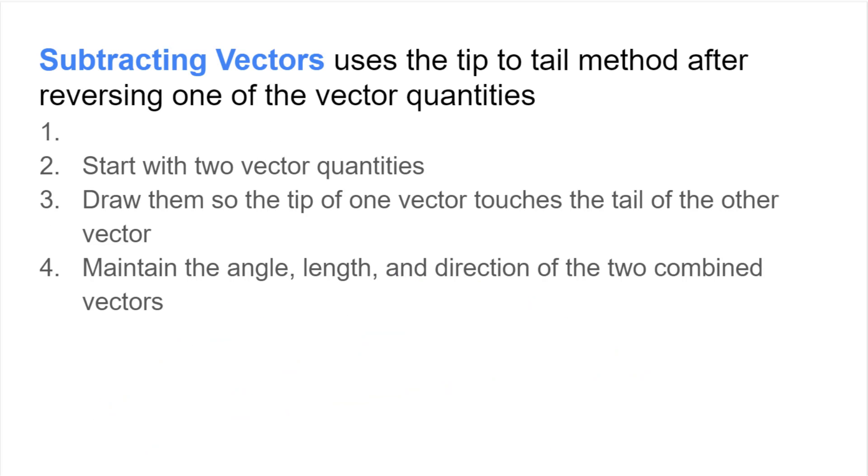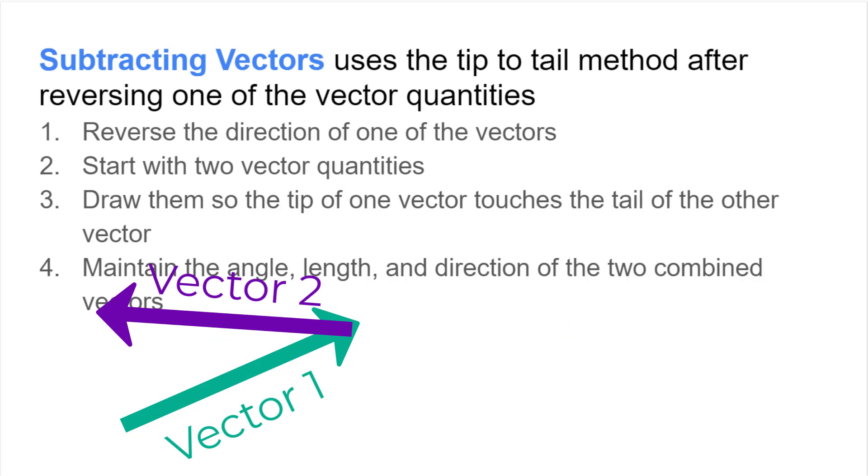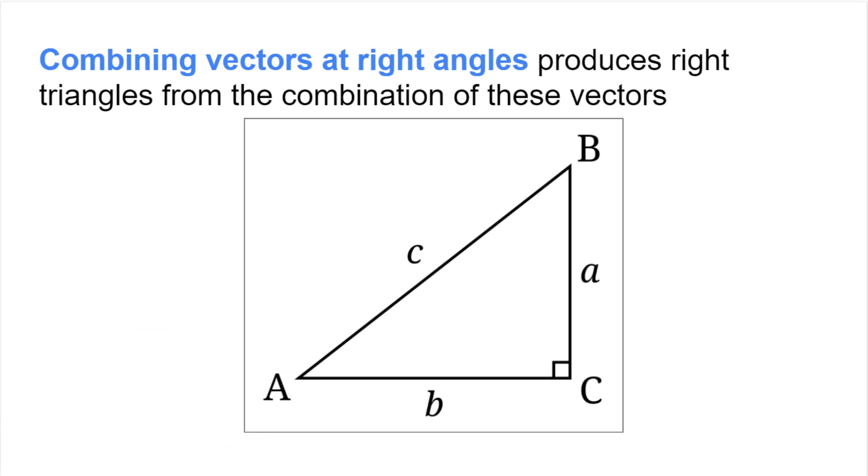Subtraction can also be used with vectors, but a different method must be used to find the resultant vector. To subtract vectors you must reverse the direction of one of the vectors and then you can use the tip to tail method used previously in the addition of vectors. Let's look back at vectors 1 and 2. If we are subtracting vector 2 from vector 1, the only thing we do differently is to reverse the direction of vector 2 first. Keep the angle and the length the same of course. And then what we'll do is we'll add the reversed vector 2 to the original vector 1. The resultant vector is different compared to when we added vectors.